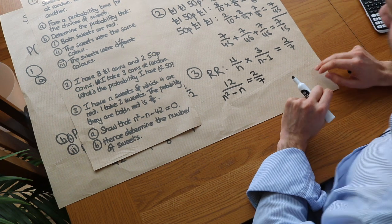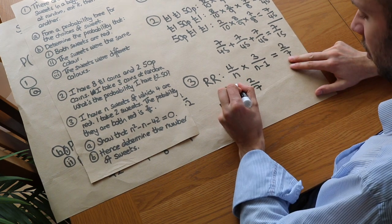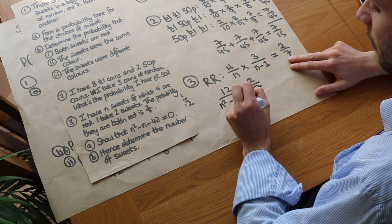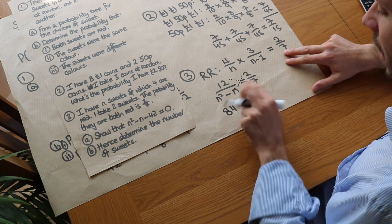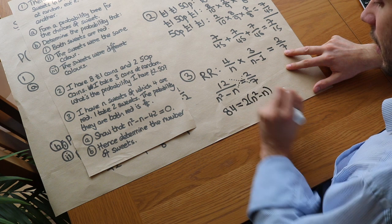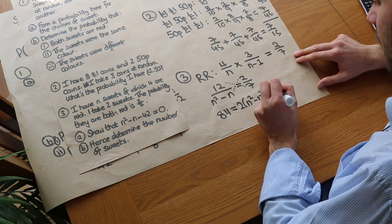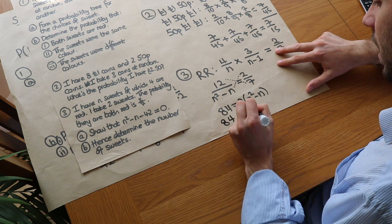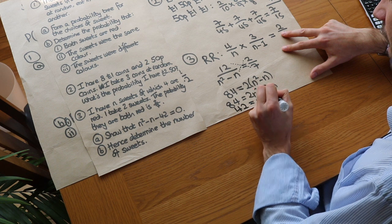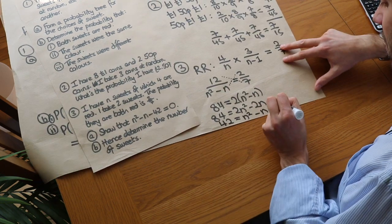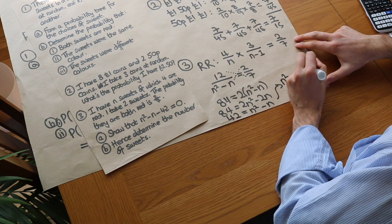Since we have a fraction equal to a fraction with nothing else, we can use cross multiplication: 12 × 7 = 2 × (n² − n), giving 84 = 2n² − 2n. Dividing both sides by 2: 42 = n² − n. Subtracting 42 from both sides gives the desired equation: n² − n − 42 = 0.